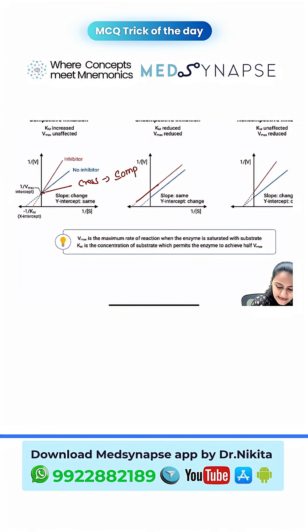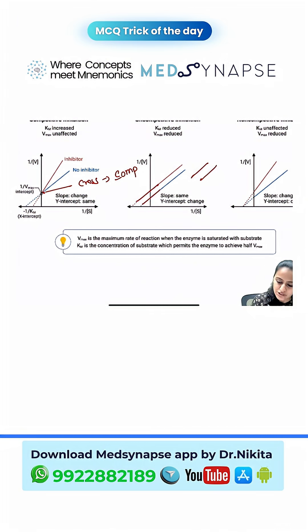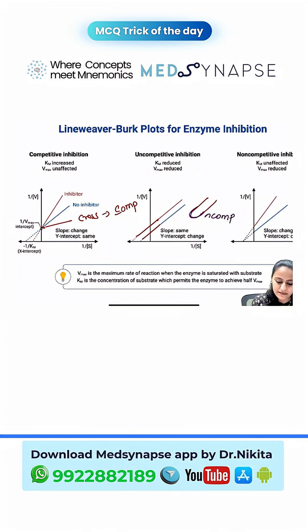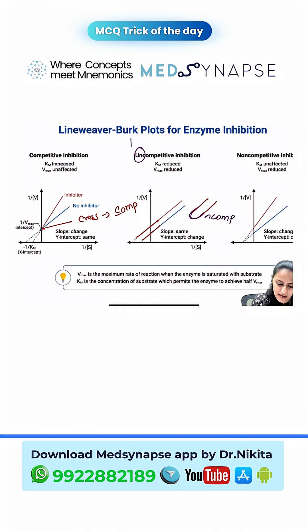If the two lines are parallel — like you see here, the two lines are parallel — just remember: a parallel line will become a U. So remember, this is uncompetitive inhibition. Uncompetitive is parallel lines.